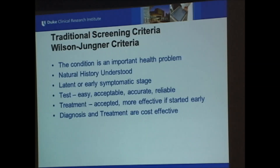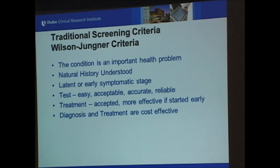I always like to begin these talks by backing up and just talking about criteria for screening. These are the traditional screening criteria by Wilson and Jungner, dating back to the 1960s. Just to summarize some of the key things: first, the condition should be an important health problem — something that's more common but maybe not necessarily deadly, or something that's rare and very serious.